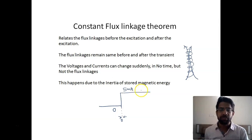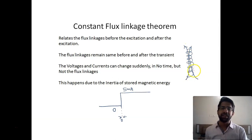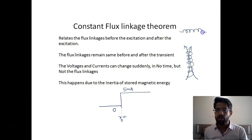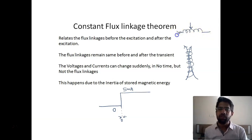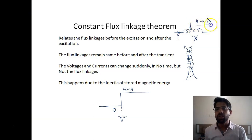This happens because of the inertia of stored magnetic energy in the inductor. The amount of flux change depends upon the stored magnetic energy already in the inductor. So if there is zero energy initially — meaning no current is flowing — even if you close the switch and current i starts flowing through the inductor, and the corresponding flux is ψ, the change from zero to ψ does not occur in zero time.